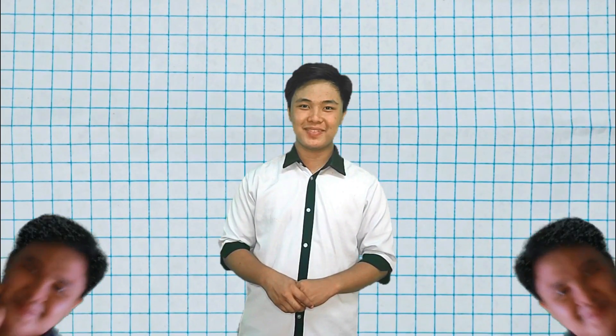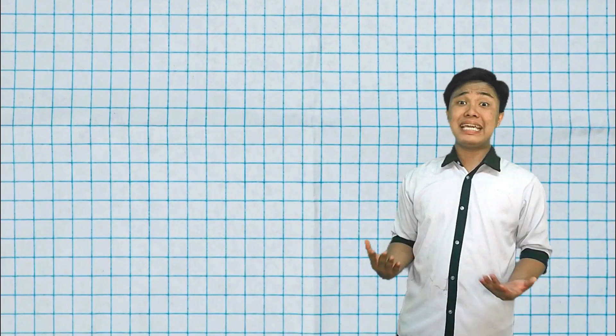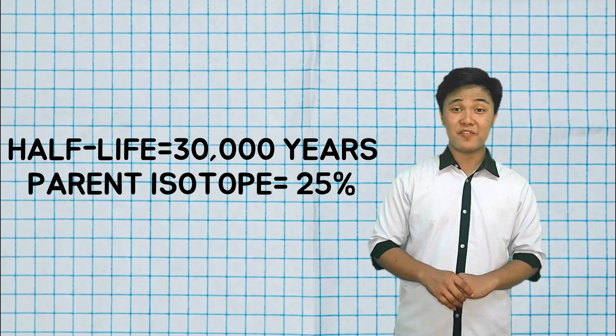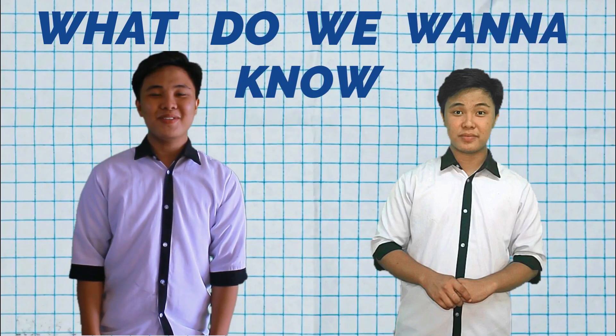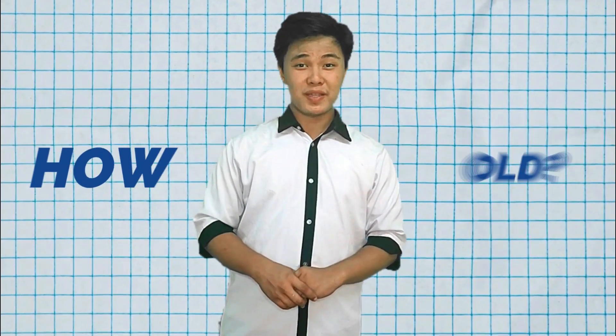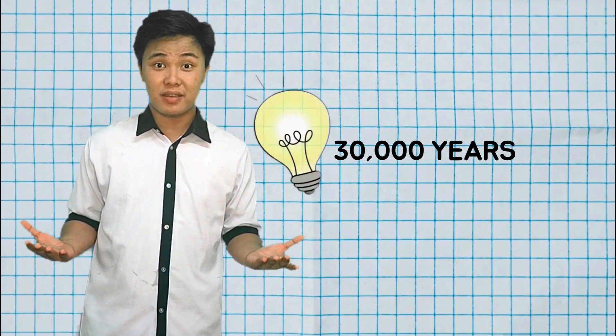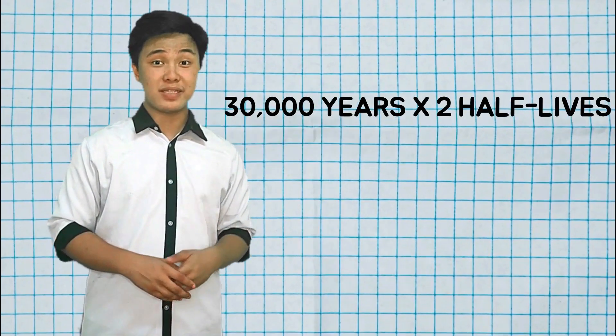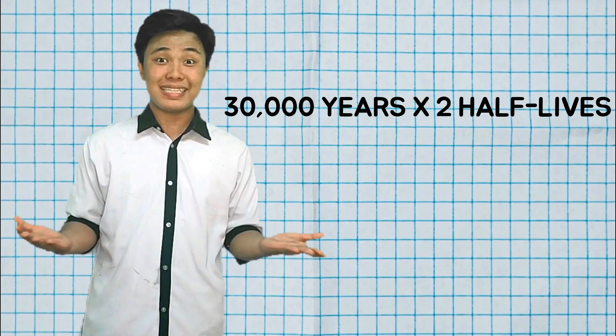First things first — here are the values we got from the problem. What do we know? The given half-life is 30,000 years, and the parent isotope remaining is 25%. What do we want to know? We want to know how old the sample is — specifically, how many half-lives have already gone by since the crystal formed. Because the half-life is 30,000 years and two half-lives have passed, to get the age of the sample we multiply 30,000 years by 2, giving us 60,000 years.